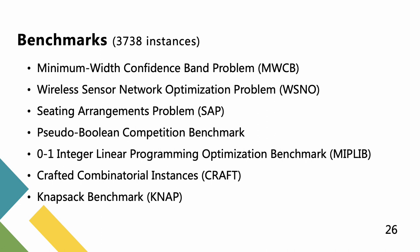We considered 3738 instances obtained from three application benchmarks and four standard benchmarks: 24 instances from the minimum width confidence band problem, 18 instances from the wireless sensor network optimization problem, 21 instances from the seating arrangement problem, 1600 OPT small int instances from the most recent PB competition in 2016, 267 instances from the mixed integer programming library MIPLIB 2017, 1025 crafted combinatory instances from the literature, and 783 instances from the NaPS benchmark.